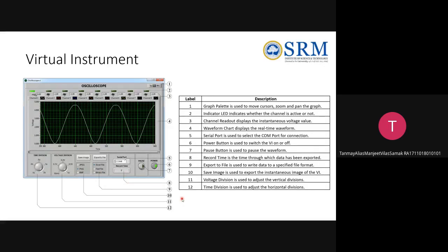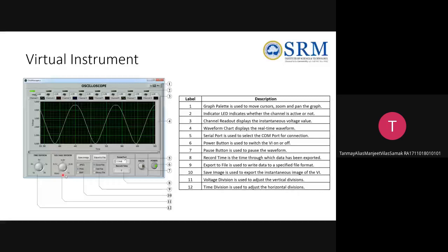The ninth element is the export-to-file function, which gives a control to start writing to a file with a radio control to select the file type. The tenth element is a similar setup for exporting as an image, allowing you to select the format and save an instantaneous image of the waveform display. The eleventh element is the voltage division control and the twelfth is the time division control. The time division sets horizontal axis increments (e.g., 0.1 or 0.2 seconds), and the voltage division sets the vertical axis — currently one volt per division, giving 0 to 5 volts.